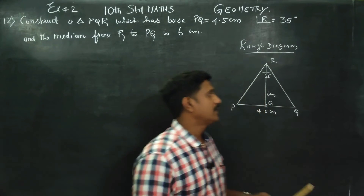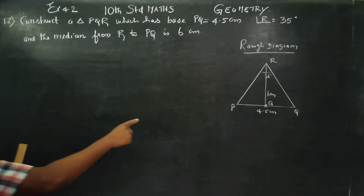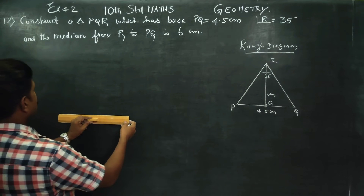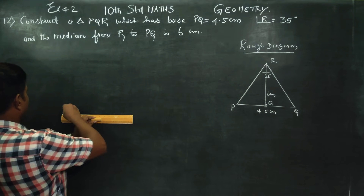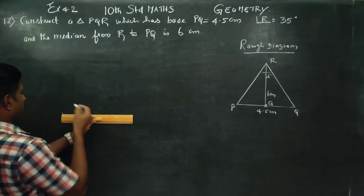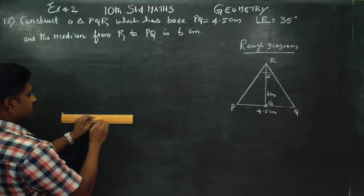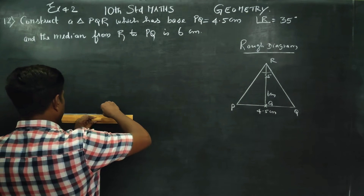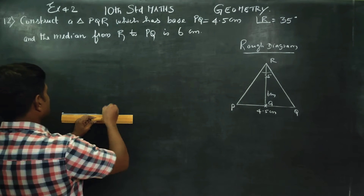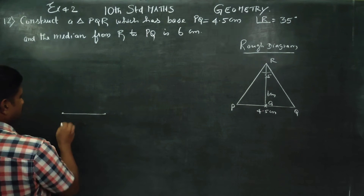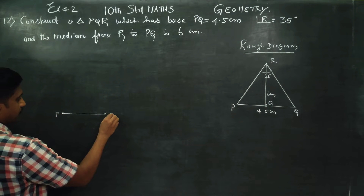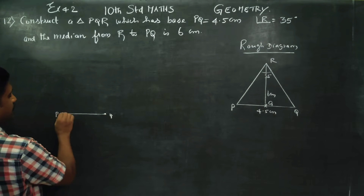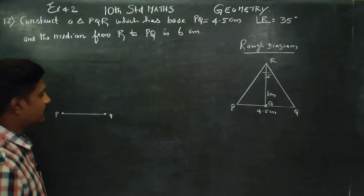This is stage 1 — the main diagram. First, draw PQ of 4.5 cm. Mark 0 and 4.5 on the scale: first draw 4.0 cm, then add 0.5 cm, so the line is joined. Mark point P at 0 and point Q at 4.5. You can see a dot at each end, and the line touches PQ.